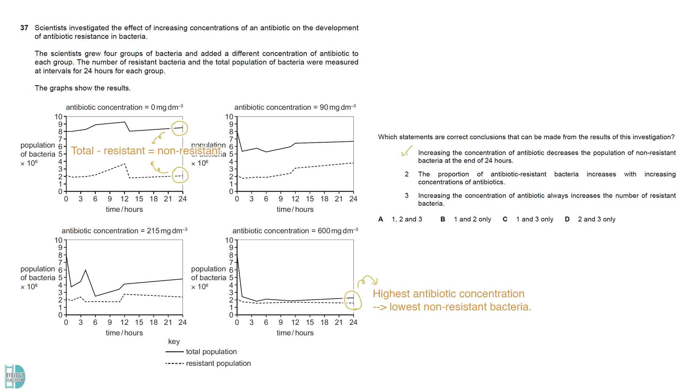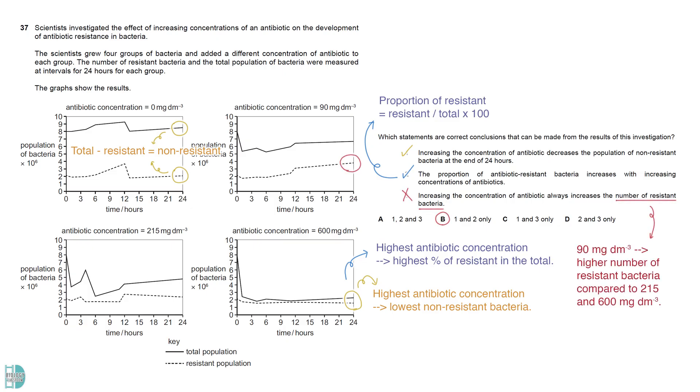Statement 1 is correct. When you deduct the resistant population from the total, you can get the population size of the non-resistant bacteria. It is true that their population size is lower as the antibiotic concentration increases. The proportion of antibiotic-resistant bacteria can be calculated by resistant over total times 100. It is true that it increases with the increasing antibiotic concentration. Three is wrong. 90 mg per dm cubed has a higher number of resistant bacteria compared to 215 and 600 mg per dm cubed.